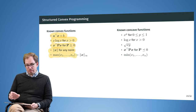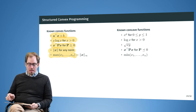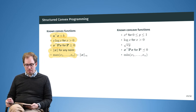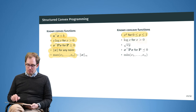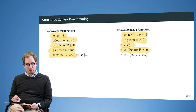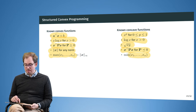The max norm (infinity norm) is by definition also convex. Known concave functions include: x to the power p for p between 0 and 1, the logarithm of x, the square root of x, x-transpose P x for P negative semi-definite, and the minimum of x. These are the most important building blocks.